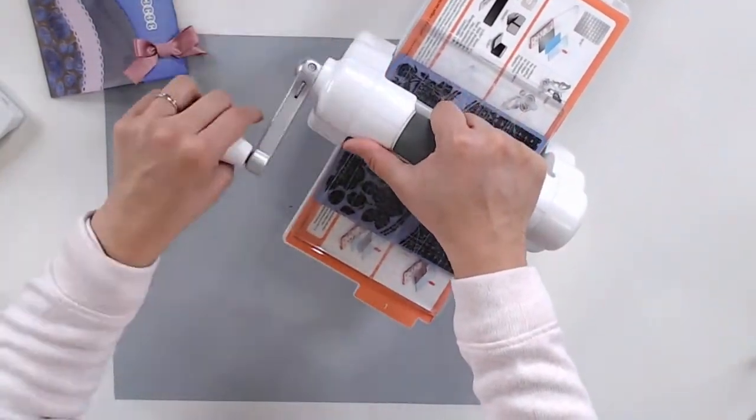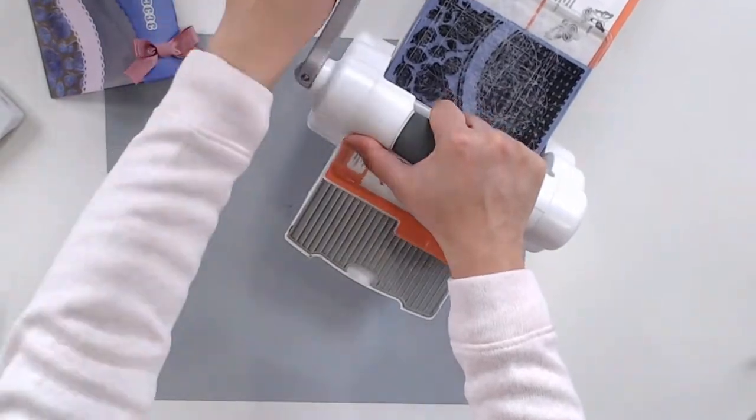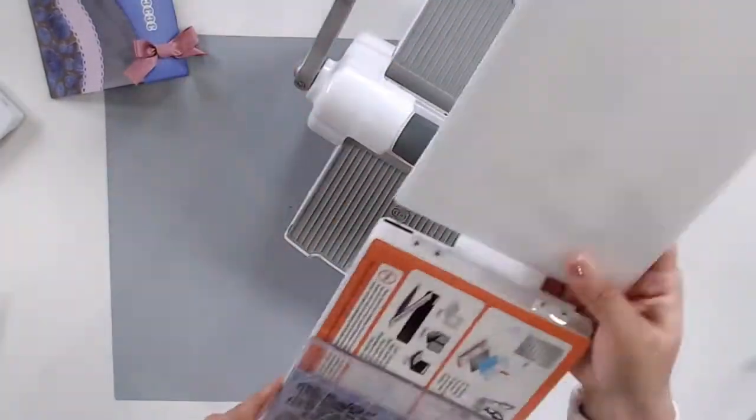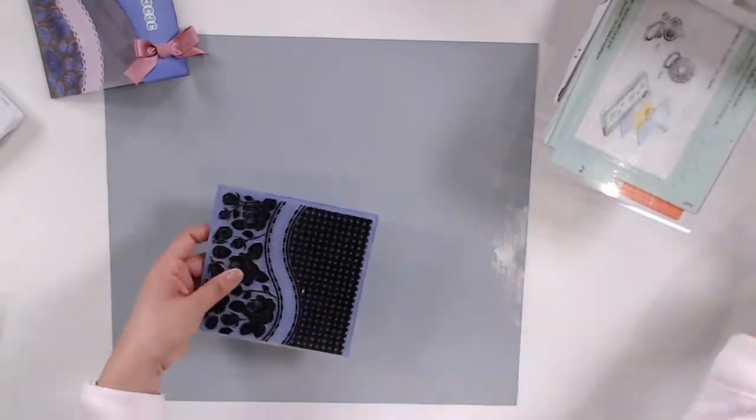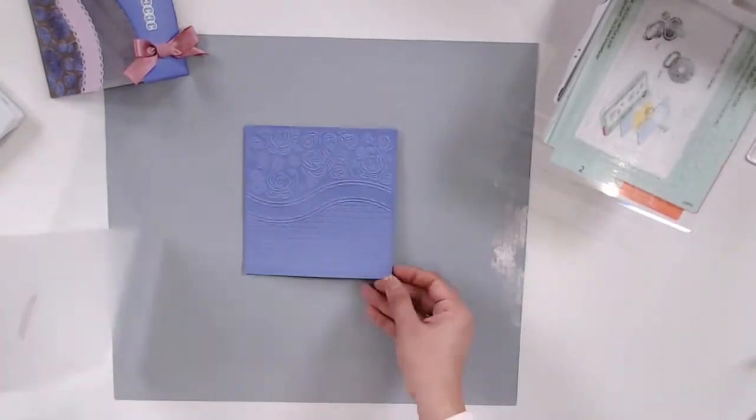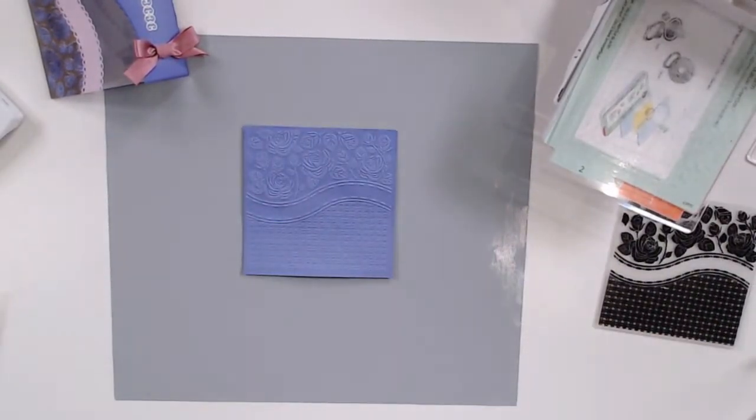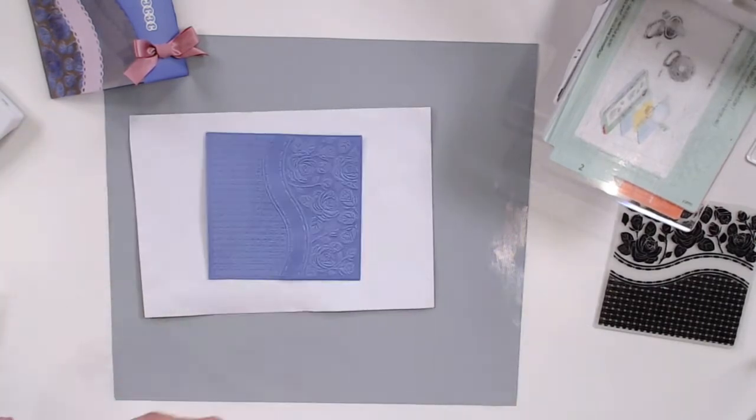I'm embossing my purple cardstock, cut down to six by six inches, which is the size of this particular embossing folder. Once I open up my card, you can see there's a little bit of moisture on the top of the design where the roses are.